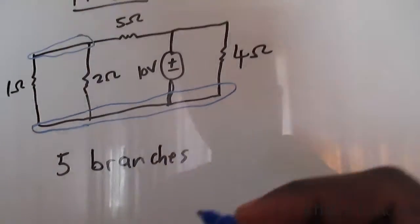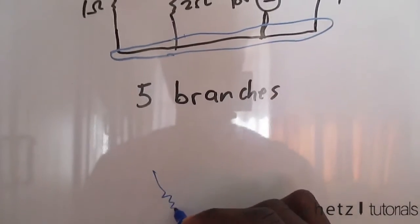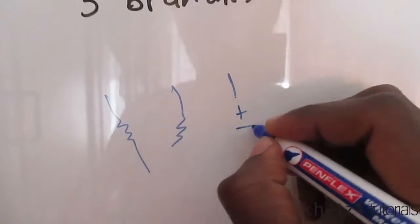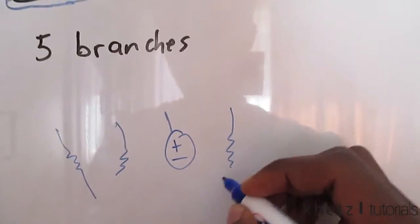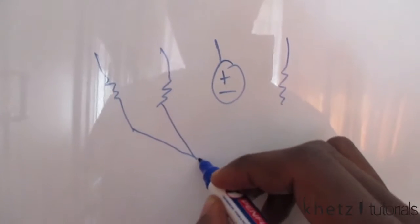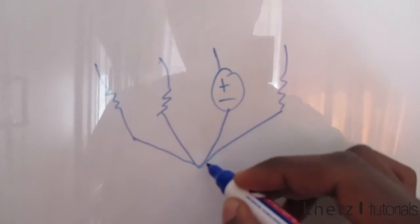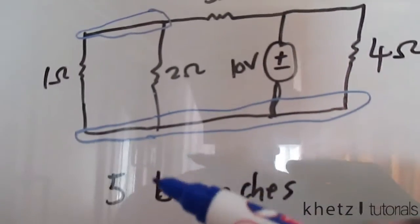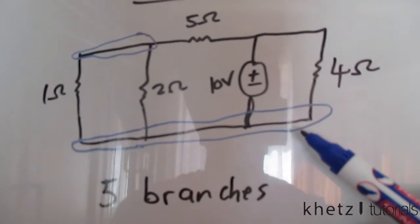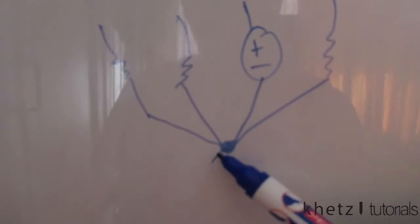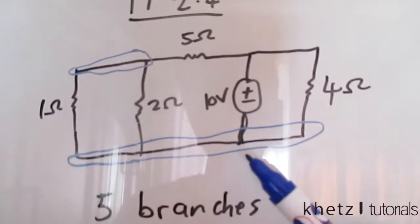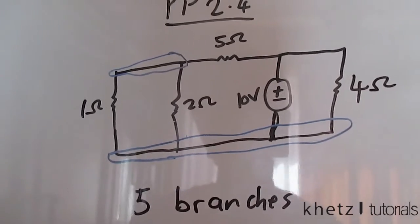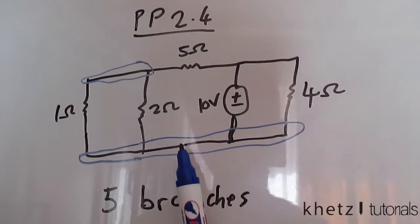If you'd like to redraw this, you'd have the 1 ohm, the 2 ohms, the voltage source, and the 4 ohm — and all of these would just converge at some point, which is a node. This is the same circuit, but you can view the wires as shorter or longer. So if there aren't any branches between a connection of branches, that forms a node, and you can extend that as long as there are no branches in between.